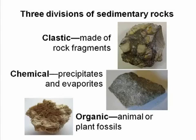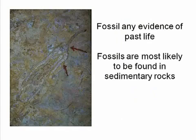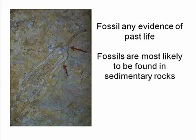Chemical division sedimentary rocks result from minerals precipitating out of water — these are called precipitates — or by material being left behind after water evaporates, which are called evaporites. The organic division contains animal or plant fossils. Fossils are any evidence of past life. Fossils are more likely to be found in sedimentary rocks because these rocks form at or near Earth's surface in an environment that may preserve rather than destroy the evidence.